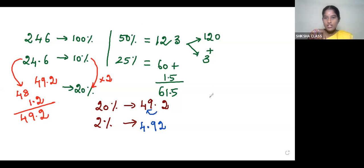Okay, now our 50% is 123. What is 5%? 12.3. Very good.